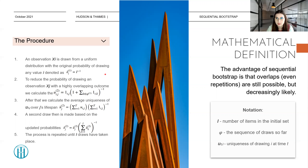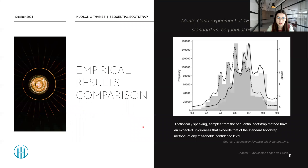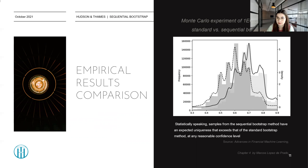Does this solution give the magnificent results we were talking about? Yes, it does. The empirical results comparison made in Advances in Financial Machine Learning by Professor Di Prado shows the result of a Monte Carlo experiment of 10 to the power of 6 iterations comparing the standard and sequential bootstrap. It shows that, statistically speaking, samples from the sequential bootstrap method have an expected uniqueness that exceeds that of a standard bootstrap method at any reasonable confidence level, proving that the sequential bootstrap is far superior to the regular bootstrap and brings better results in terms of uniqueness.